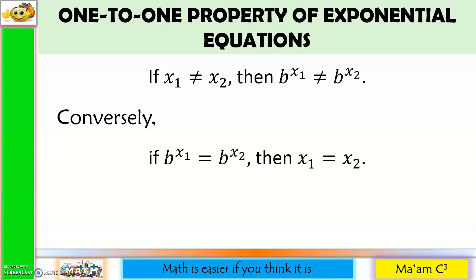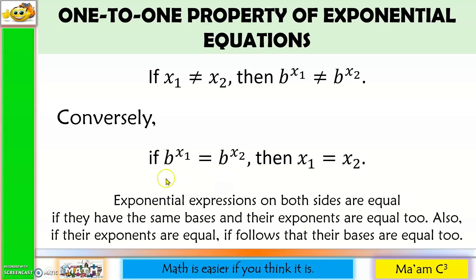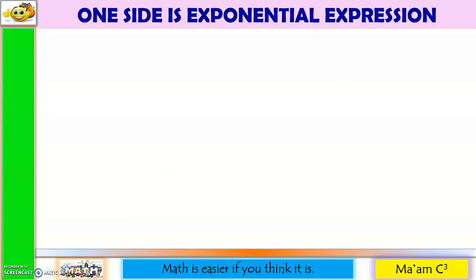One-to-one property of exponential equations: if x₁ is not equal to x₂, then b raised to x₁ is not equal to b raised to x₂. Conversely, if b raised to x₁ is equal to b raised to x₂, then x₁ is equal to x₂. It means exponential expressions on both sides are equal if they have the same base and their exponents are equal. Also, if their exponents are equal, it follows that their bases are equal too. Let us start solving.